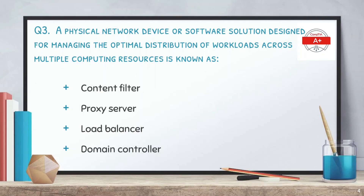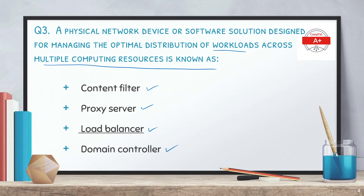Question number three: a physical network device or software solution designed for managing the optimal distribution of workload across multiple computing resources is known as — the options are content filter, proxy server, load balancer, and domain controller. The correct answer is load balancer. As the name indicates, a load balancer balances the load among different workloads.